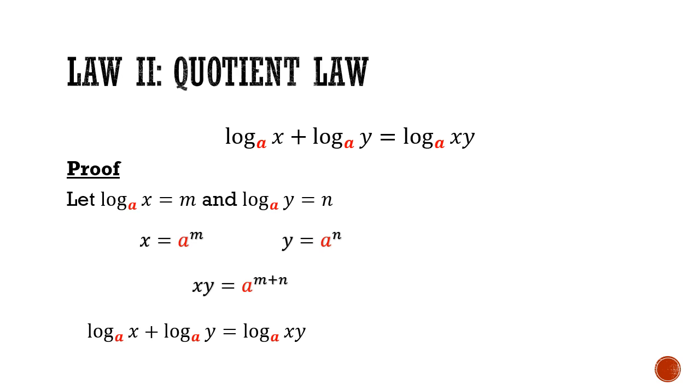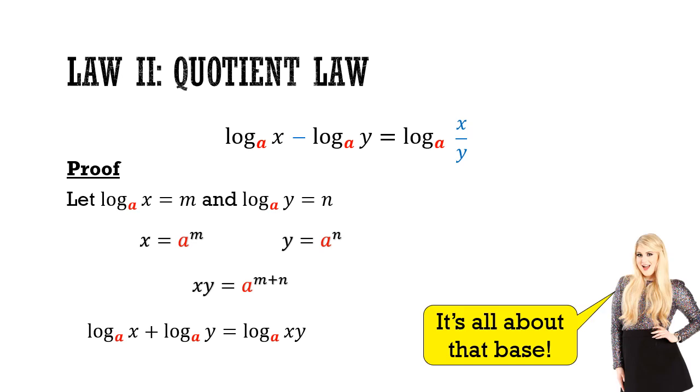In the second law, which is the quotient law, we just need to make some amendments to law 1. So instead of adding, we are subtracting one log from another, and this time, we will get the quotient x over y. And remember, for this law to be able to be applied, we need the logs to be of the same base.